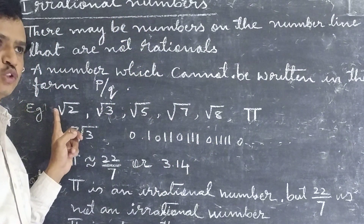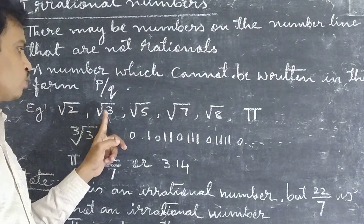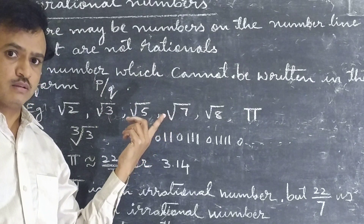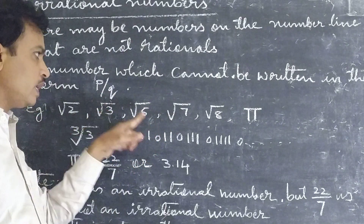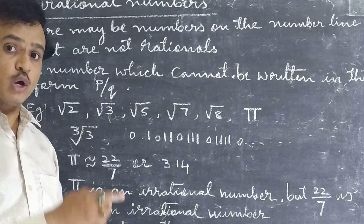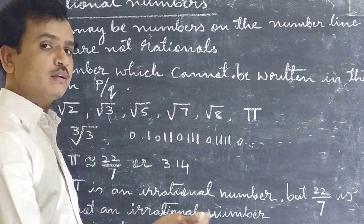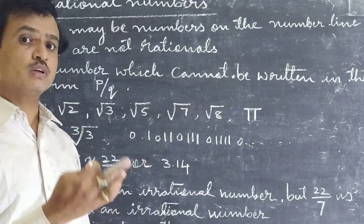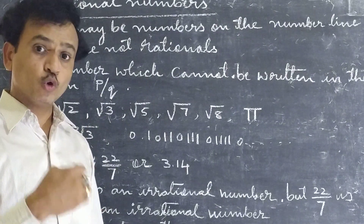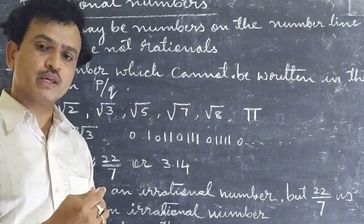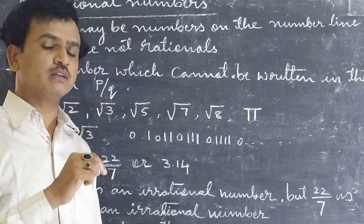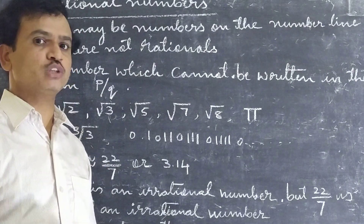For example, square root 2, square root 3 are irrational numbers. I did not take square root 4 here — after square root 3, I go to square root 5. There is a reason for that. Square root of 4 equals 2, and 2 can be written as 2 by 1, which is in the form P by Q. So square root of 4 is a rational number, not an irrational number.